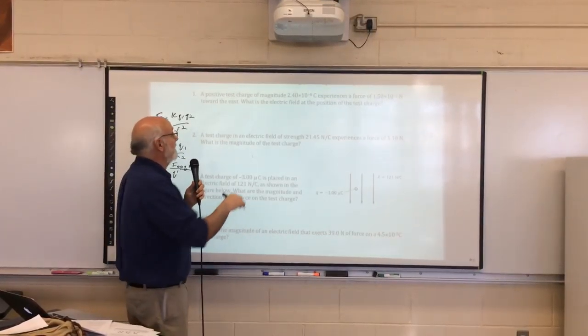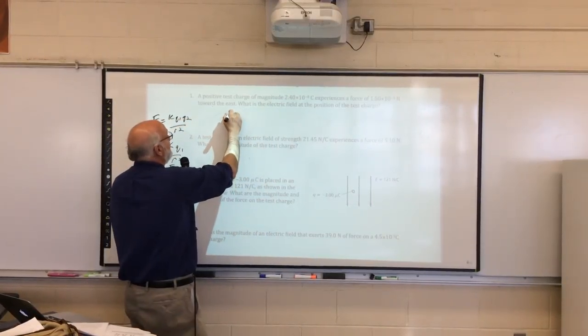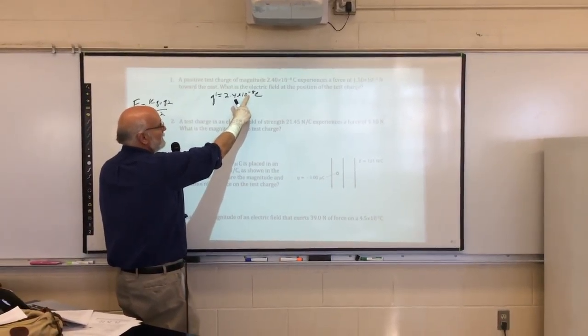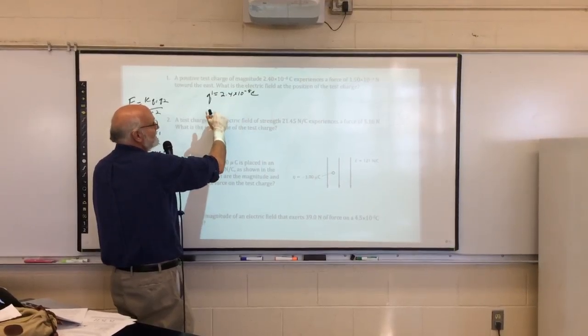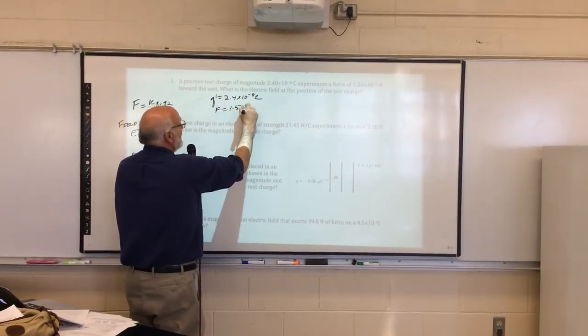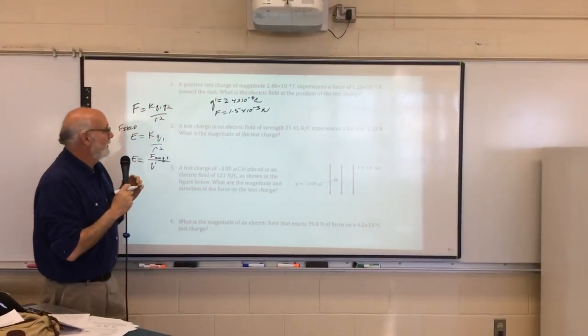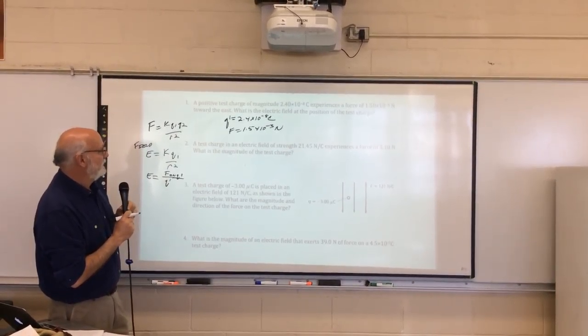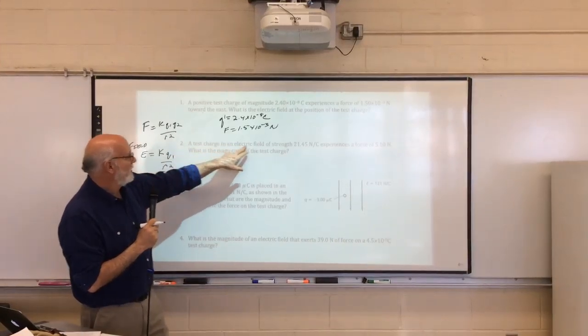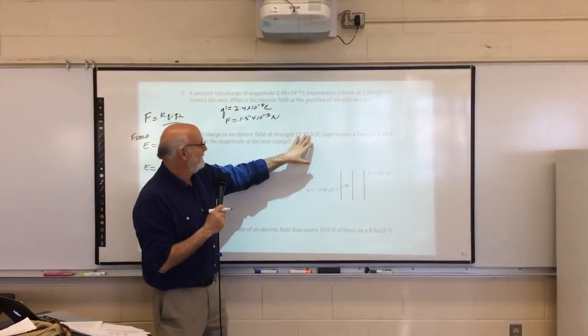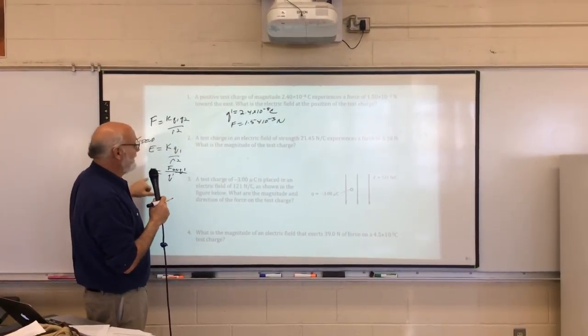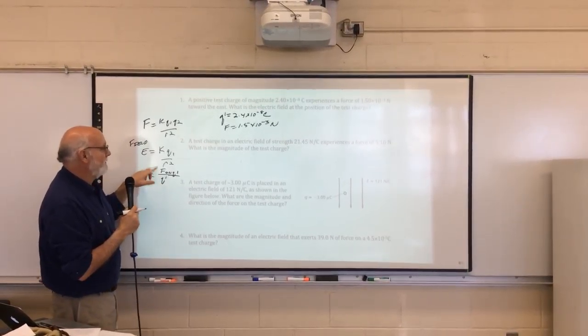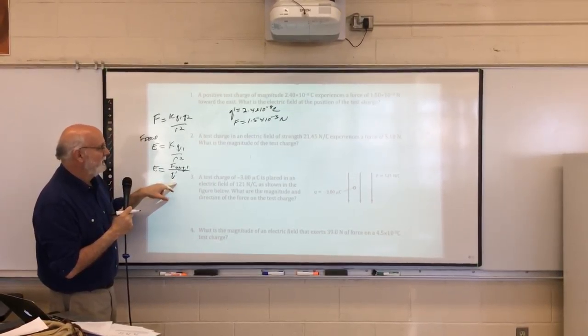So if you're taking a look at something like this, positive test charge, magnitude, q prime, 2.4 times 10 to the negative eighth coulombs, see how small that is? We've been using negative six, now it's negative eight, so its field is inconsequential. And the force is 1.5 times 10 to the negative third newtons. Well, if you take a look, I'm trying to find the field, I know the force, I know the charge, pretty darn simple to do.